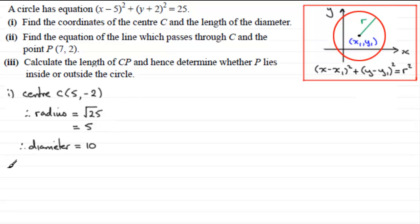Now in part two, we've got to find the equation of the line which passes through our centre point C and the point P. Now whenever I'm doing questions based on coordinate geometry, I always like to just draw a sketch. So I'll just have my axes here, x and y. We've got our point C with coordinates (5, -2), so 5 across 2 down. And we've got our point P with coordinates (7, 2), so 7 across 2 up. It's not drawn to scale, but it will give us some idea of what's going on.